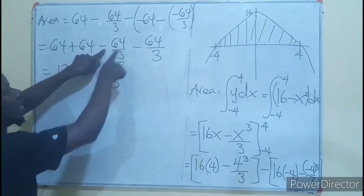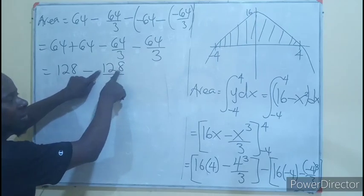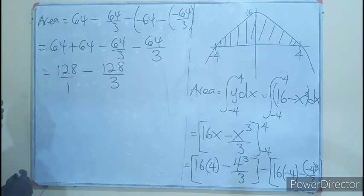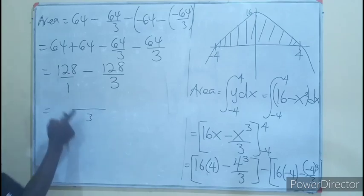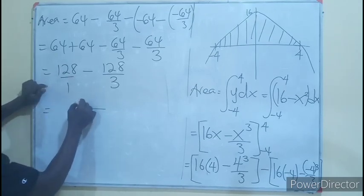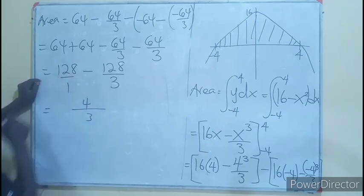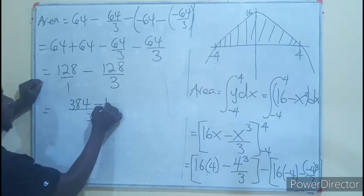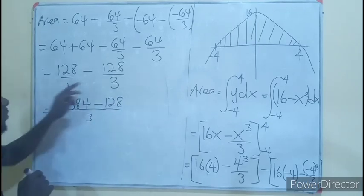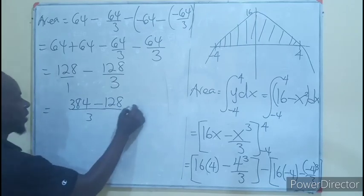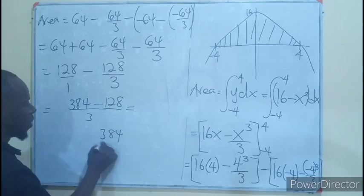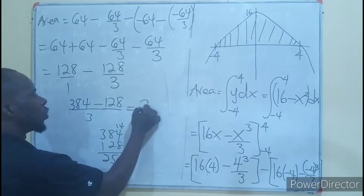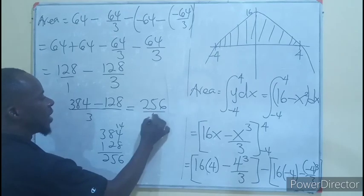Don't forget these are all negative. So this negative goes along with it. So I have 128 over 1. My LCM is 3. So this becomes 384. Then minus 128. When we subtract that from this, we have 384 minus 128 equals 256 divided by 3.